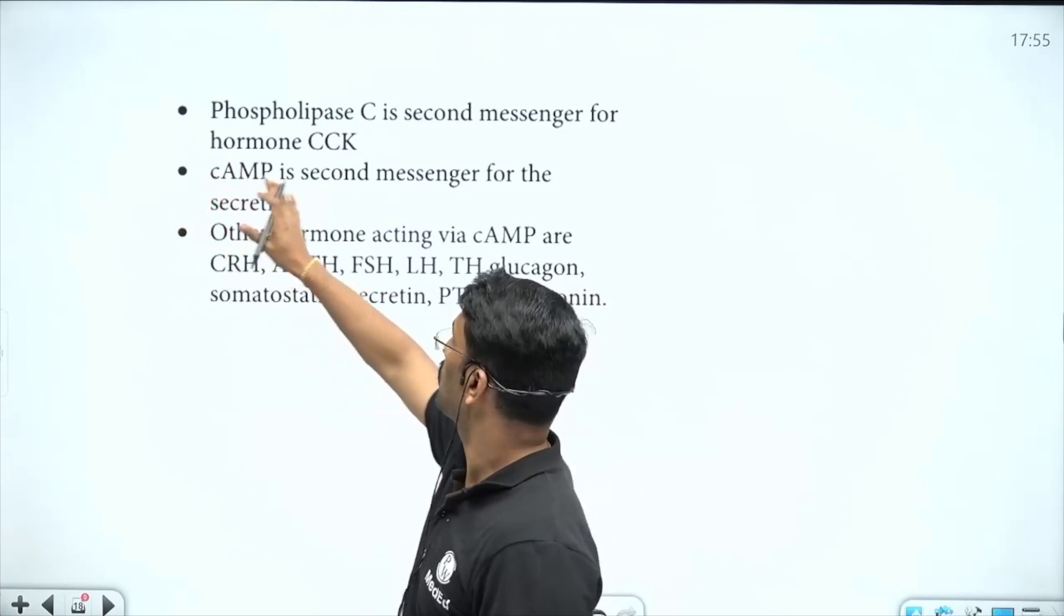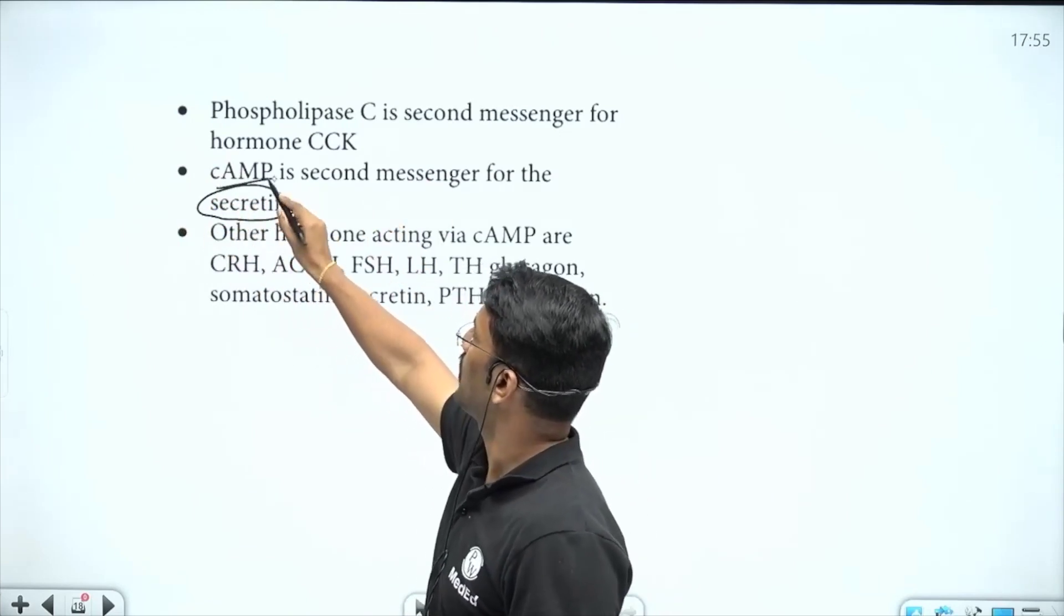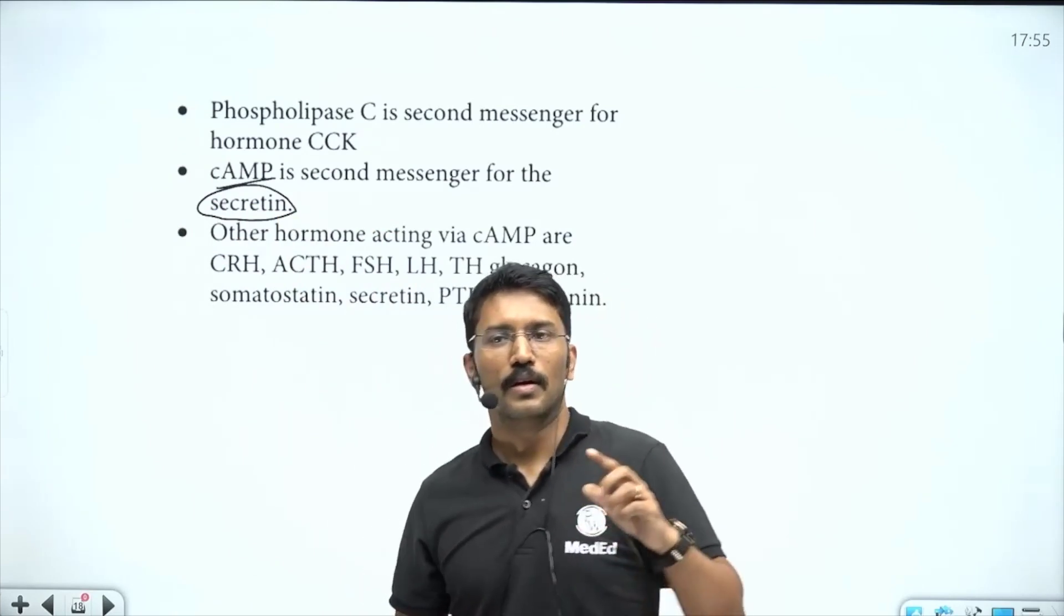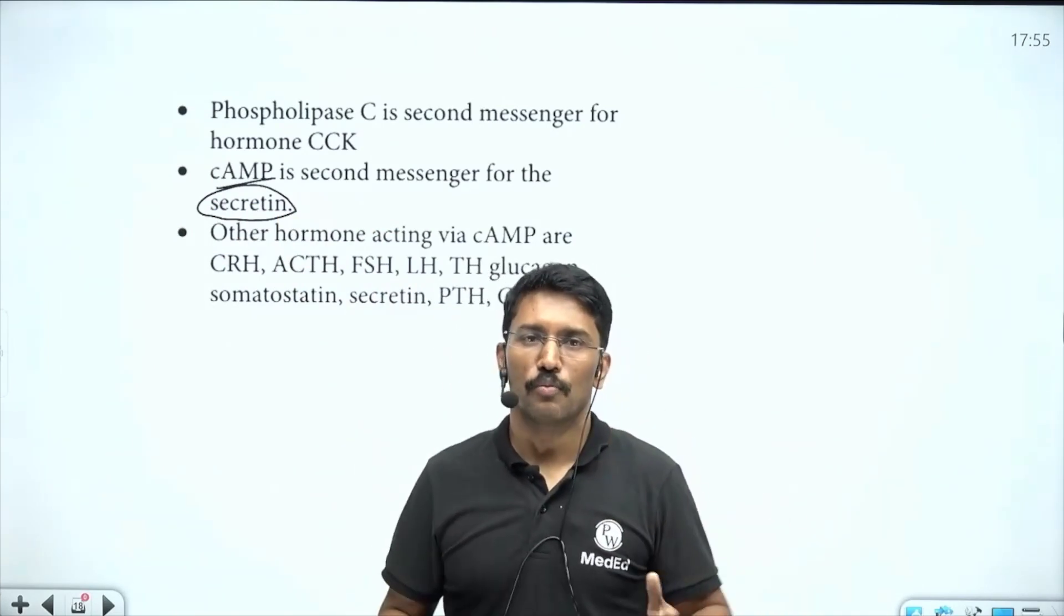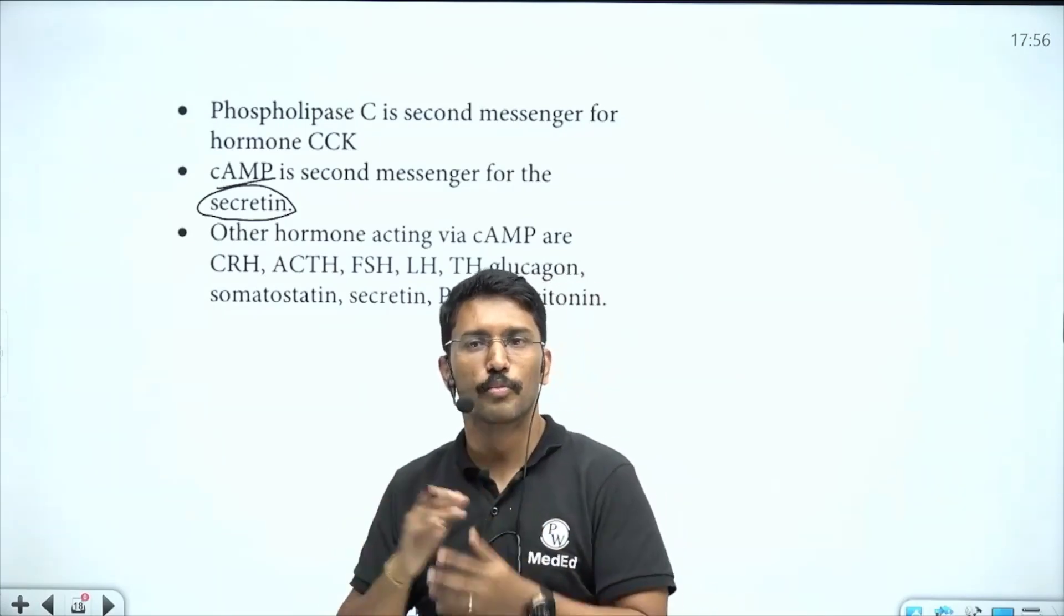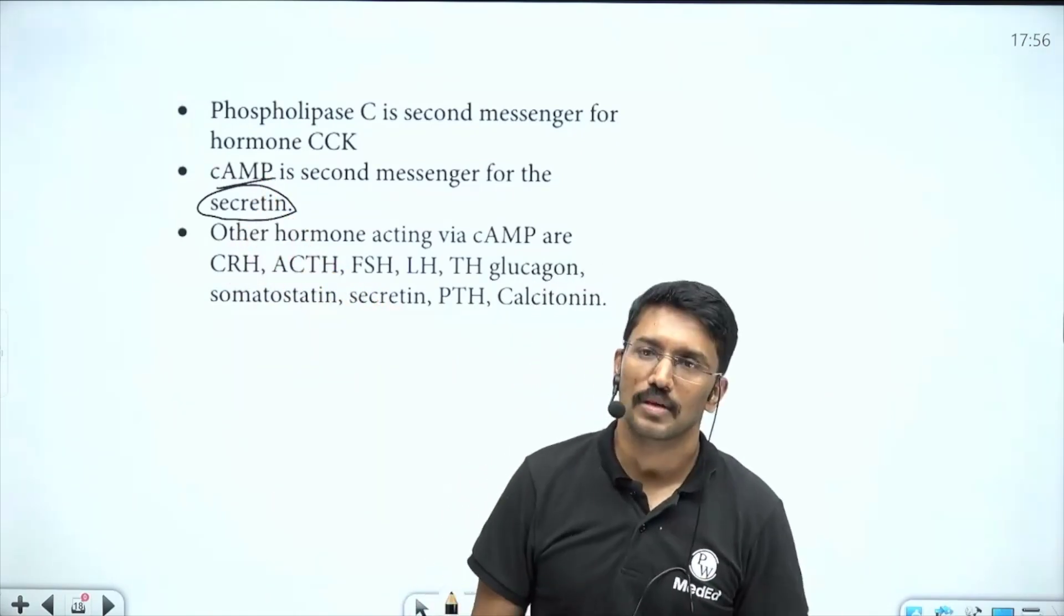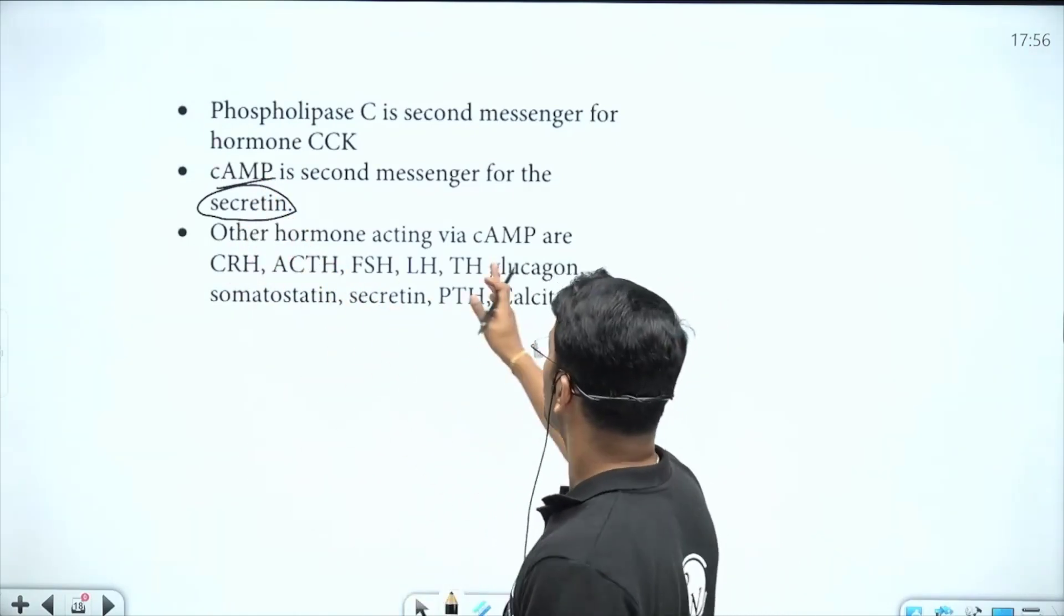Here is a summary I was talking to you about. Secretin is using cyclic AMP as the second messenger system. Remember, the maximum number of hormones in the human body use G protein-coupled receptors, and among the G protein-coupled receptors, cyclic AMP is the most commonly used second messenger system.